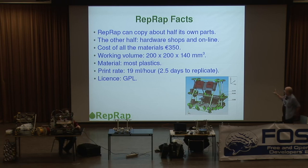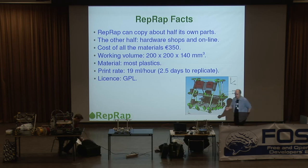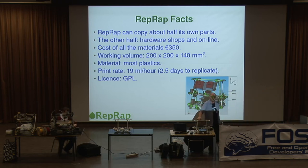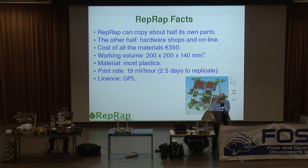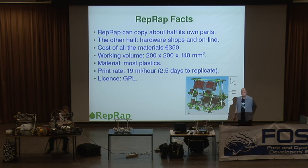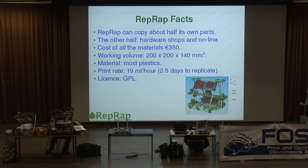It was deliberately designed so that the bits it can't make are very easy to obtain from hardware shops or online stores. For example, these M8 threaded rods are completely standard size — you can get those from a builder's merchant just down the road. These standard NEMA 17 stepper motors cost about 10 euros each. Everything in the machine that it can't make for itself has been designed to be as easily available as possible, and the cost of all the materials to put the machine together is about 350 euros.